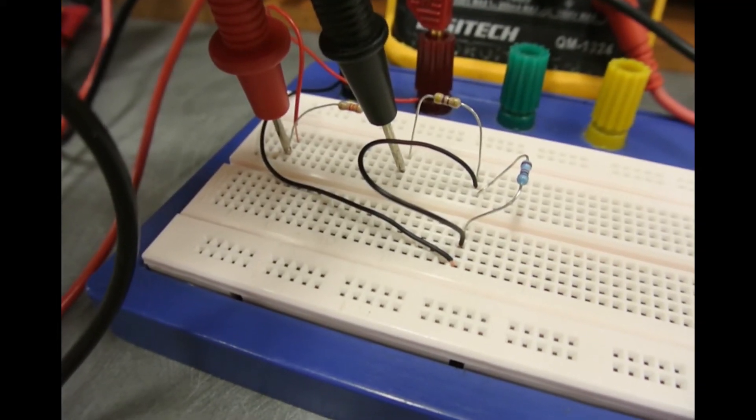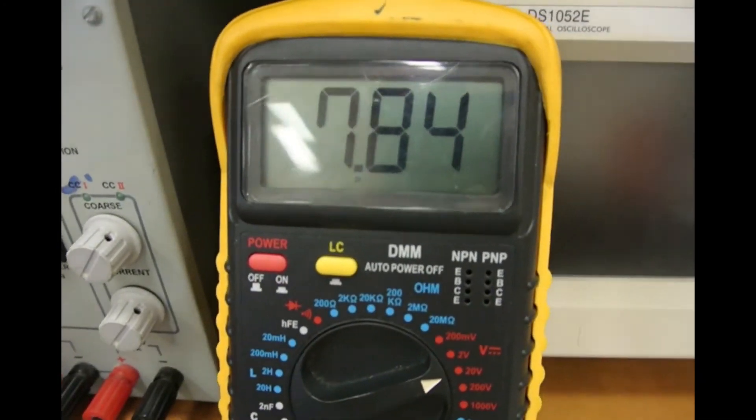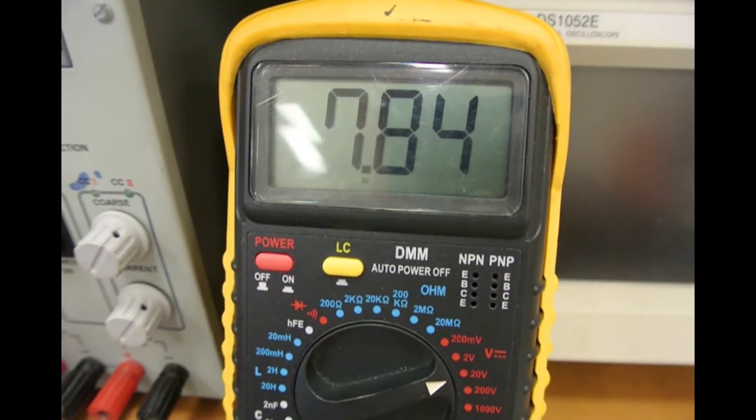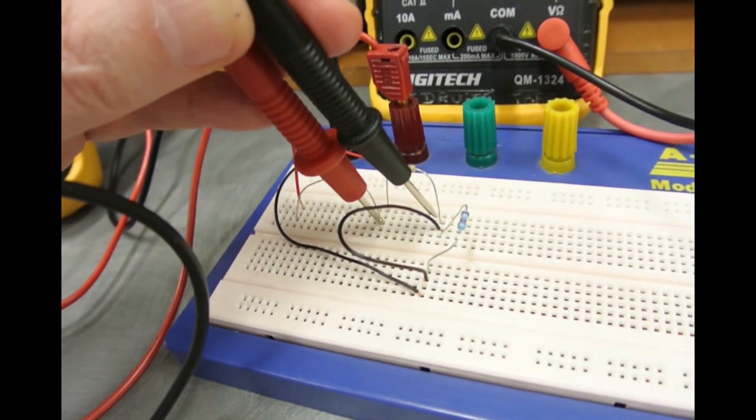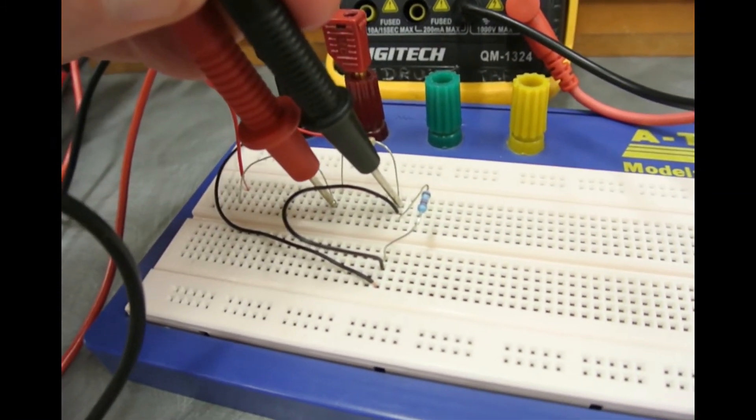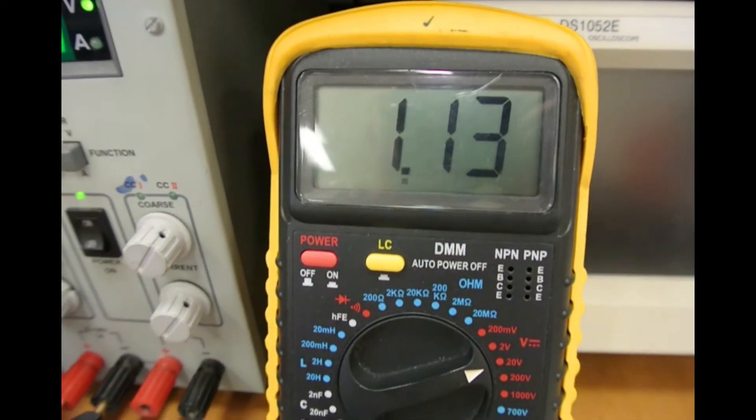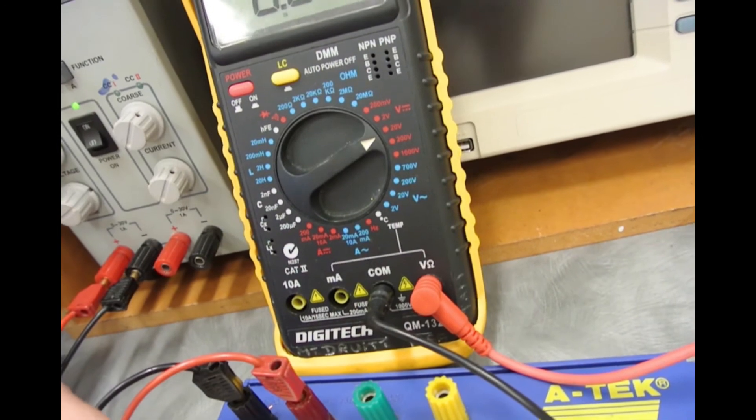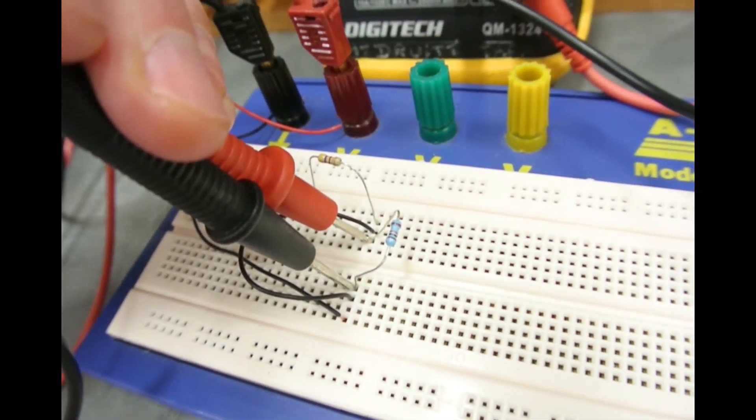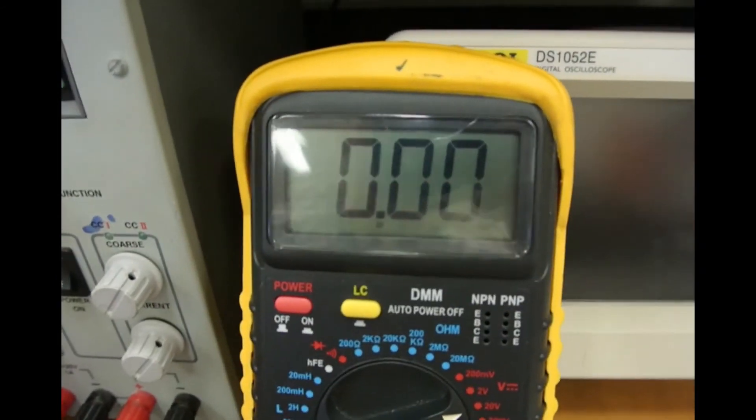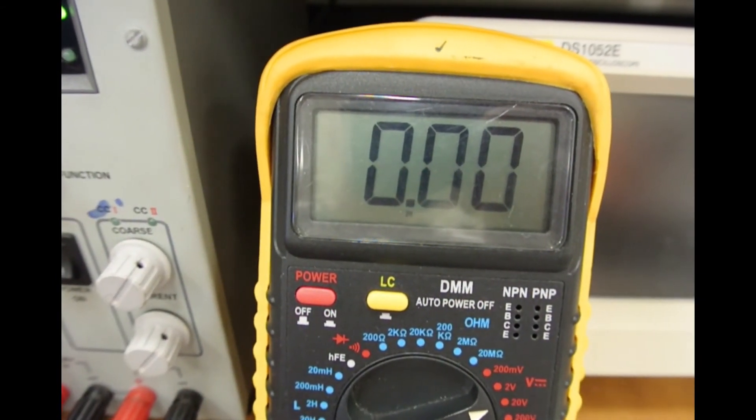The voltage across the 3.3k resistor is now measured again at 7.84 volts. The voltage across the 470 ohm resistor is measured at 1.13 volts. And as expected, the voltage across the short circuited component is always going to be zero volts. So those values have been recorded.